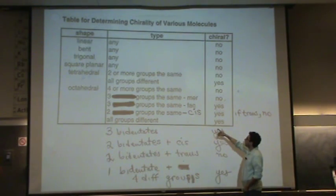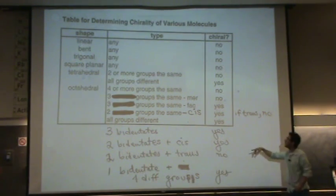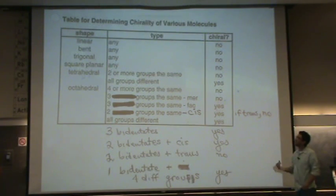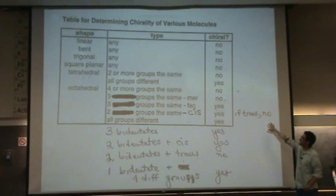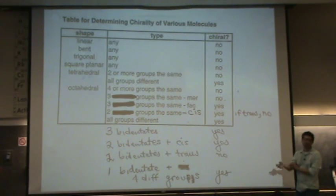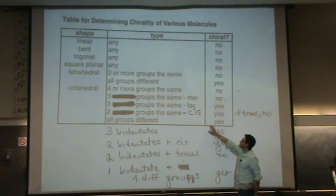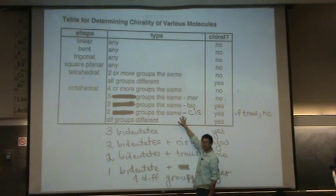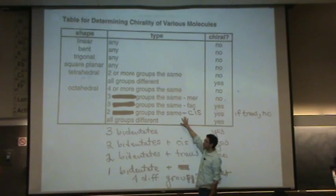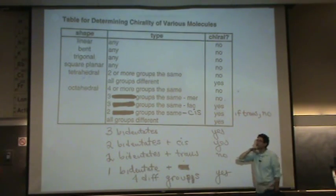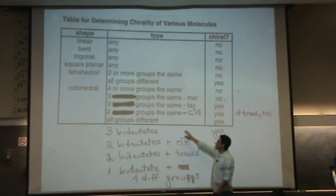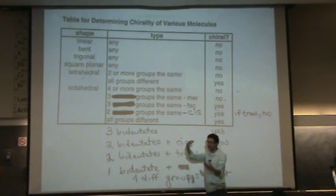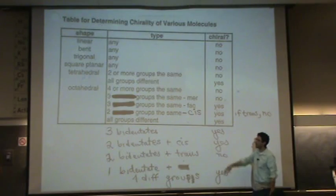Now look at two same ligands. If two groups are the same and it's cis, it will be chiral — but for trans, no. If it's cis and all the other four groups are different, it's going to be chiral. And finally, if all groups are different on the octahedral — so there are six different ligands — yes, it will be chiral.